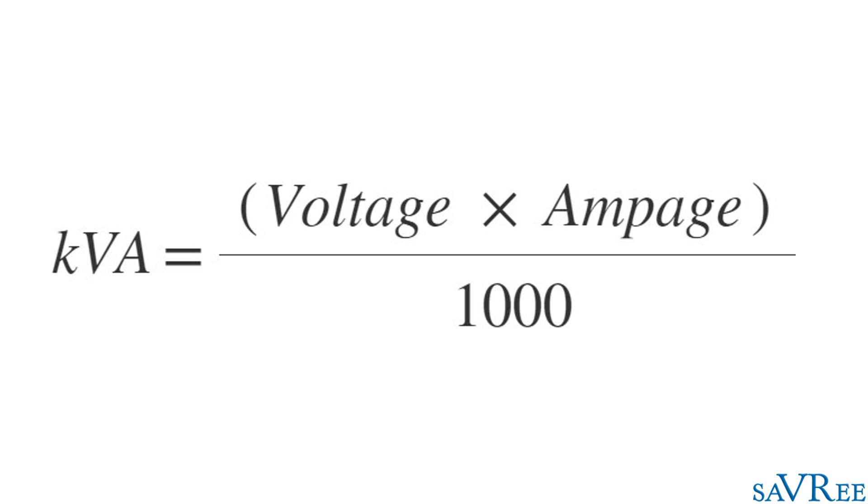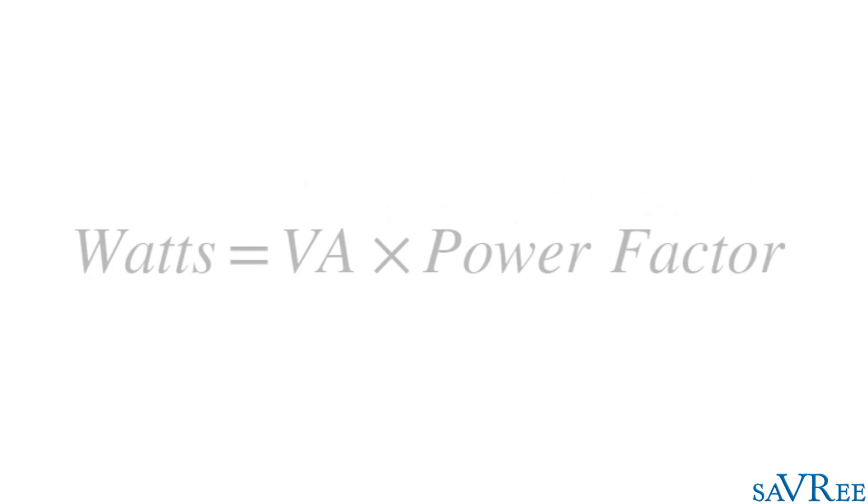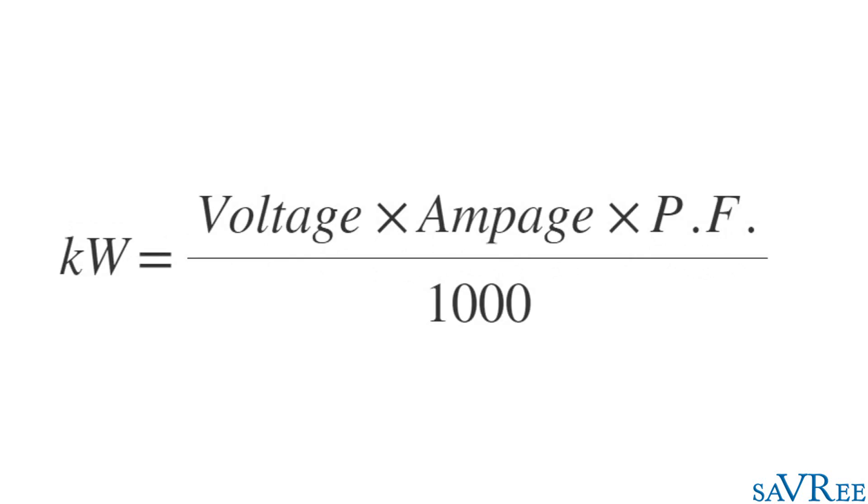Let's now take a look at the equations associated with watts and kilowatts. Watts equals voltage multiplied by ampage multiplied by the power factor. If we're looking at kilowatts, then we'll do voltage multiplied by ampage multiplied by the power factor divided by a thousand.